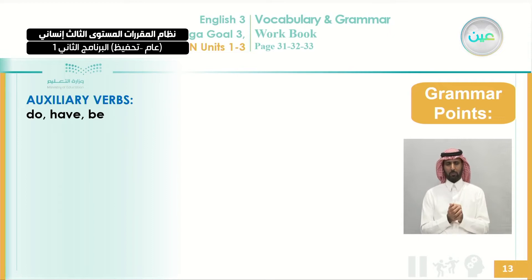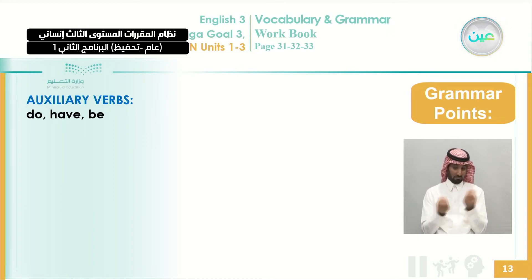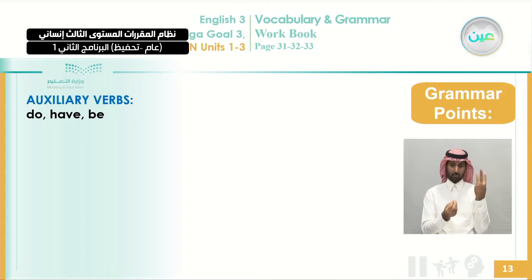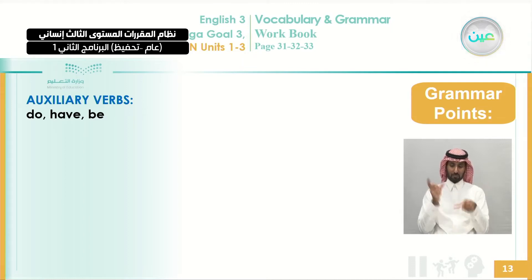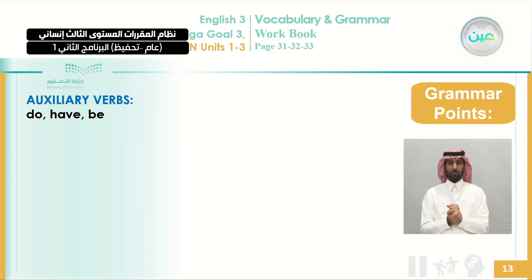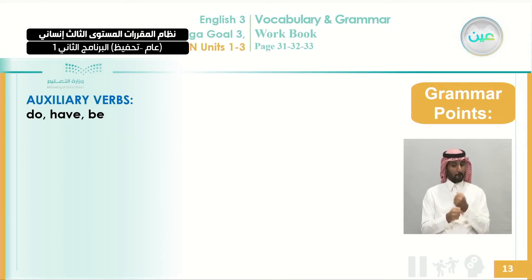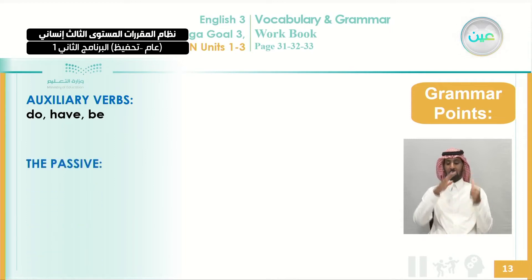Auxiliary verbs are verbs that come with another verb. If you see one of these three verbs alongside another verb, it is functioning as an auxiliary or helping verb. When they appear alone without another verb, they are working as main verbs.